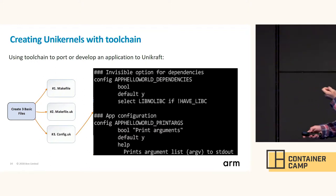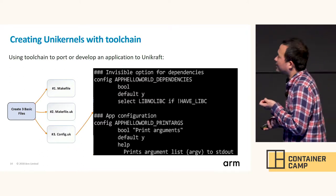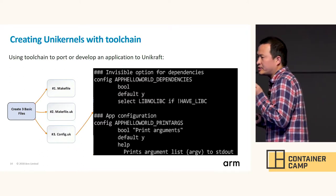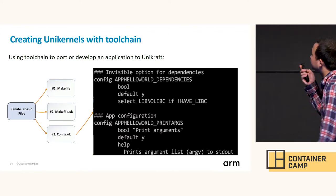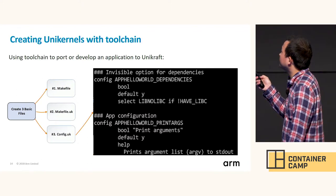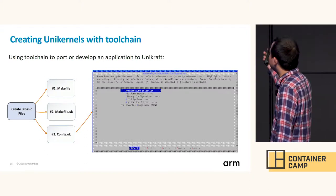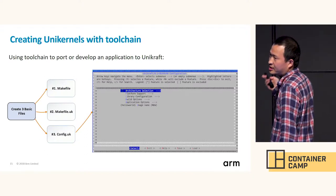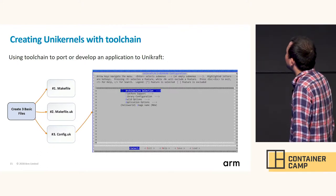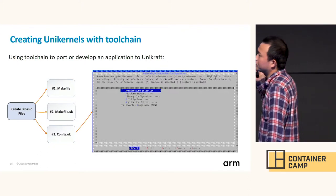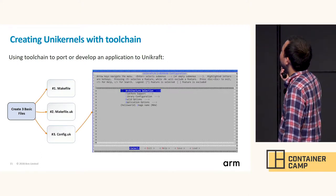You will define the configurations for your application and the dependencies on external libraries here. We use this file to drive the UniKraft menuconfig for selecting libraries and doing configuration. After this, we can save, exit, and compile the code.